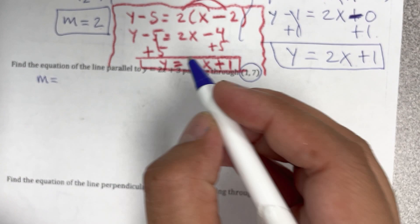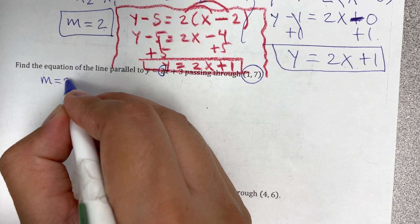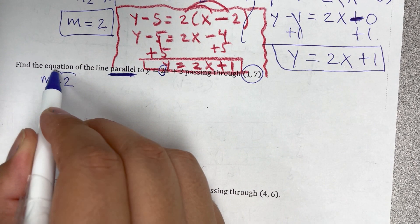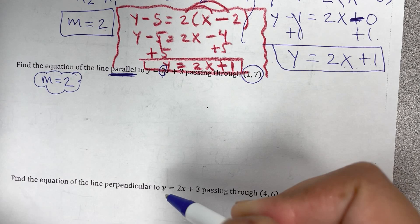So ¿cómo conseguimos el slope de aquí? Siempre que esté la y solita va a estar el coeficiente de x, the number next to x, it's a coefficient, that's the slope. Y cuando dice la línea es paralela, va a ser o utilizarse el mismo slope que está allí. Muy importante. Si la línea es paralela, ese es el número que voy a utilizar. Ahorita para la perpendicular les voy a decir cómo tenemos que cambiar. You probably already remember.